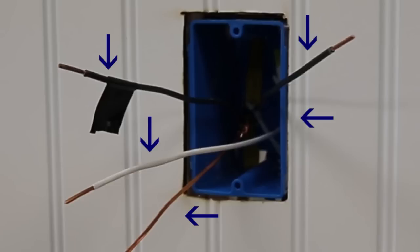The hot wire may be black or red. The ground wire could be green or bare copper. If you are unsure, please contact an electrician.